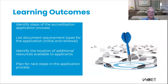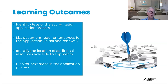By the end of the webinar today, you'll be able to do the following: identify the steps of the AP application process as we walk you through all of the steps involved in accreditation. You'll also be able to list document requirement types for the initial and the renewal application. We'll give you a description and a couple of examples of each type of document. You'll be able to identify the location of additional resources available to applicants, and you can plan for your next steps in the application process. We encourage you to take a moment at the end of this webinar to jot down next steps for you and your organization.